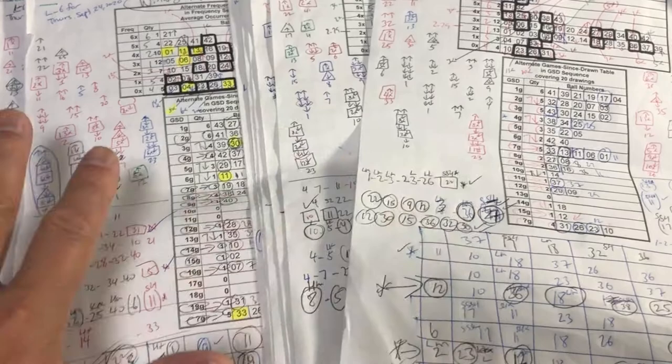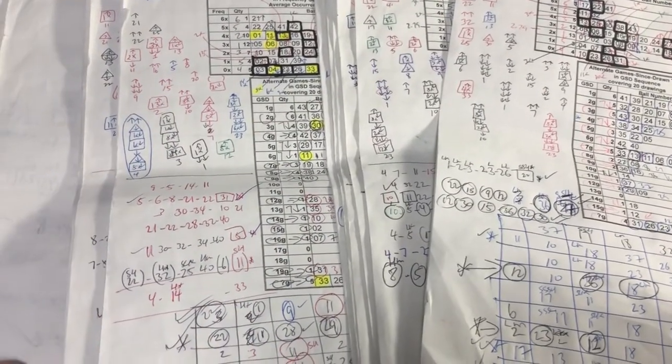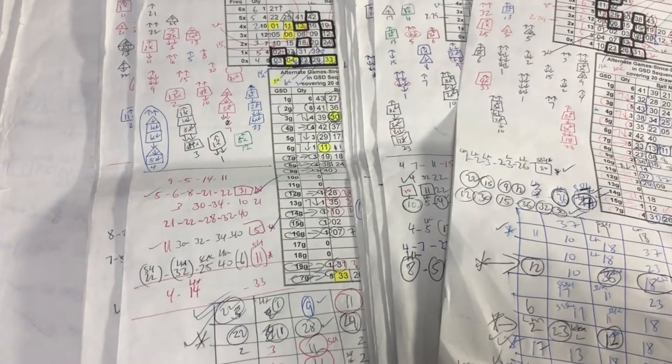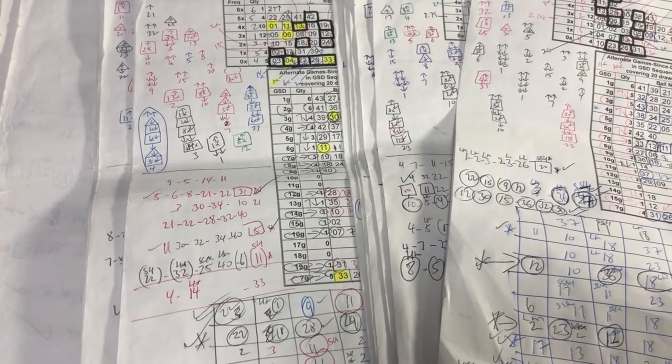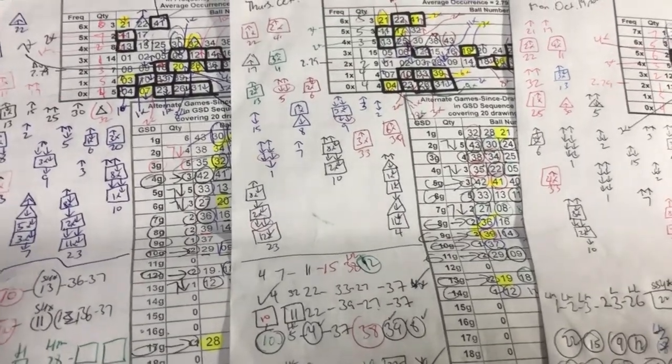You're looking at my lottery homework. I've got about 20 of these sheets, maybe more. You don't need that many, but it's up to you. I just keep it for reference. What you really need is the last three winning draws.